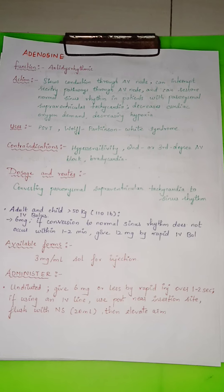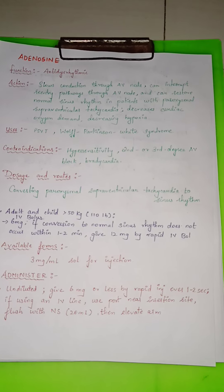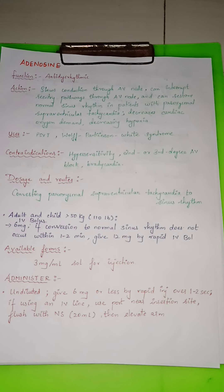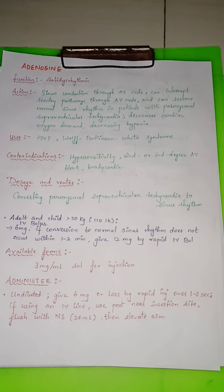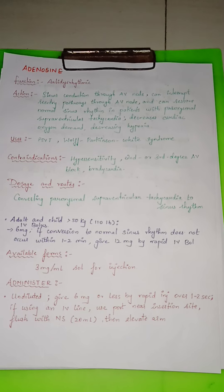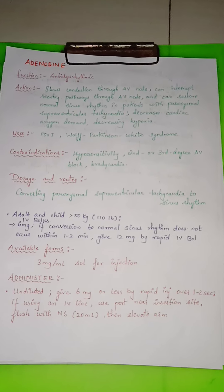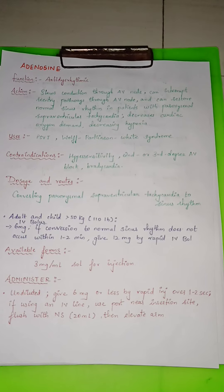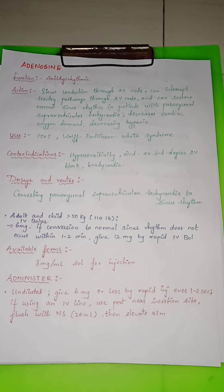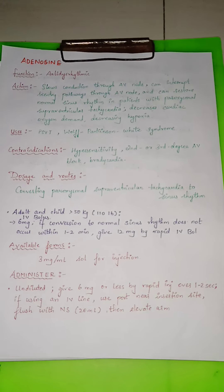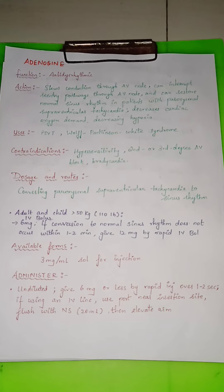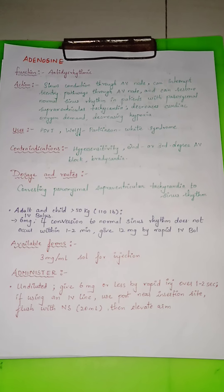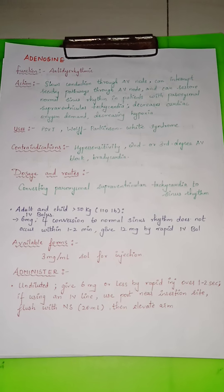The action of adenosine is that it slows conduction through the AV node, can interrupt re-entry pathways through the AV node, and can restore normal sinus rhythm in patients with paroxysmal supraventricular tachycardia. In SVT, the heart rate waves on ECG appear very rapid. Adenosine also decreases cardiac oxygen demand, thereby decreasing hypoxia.